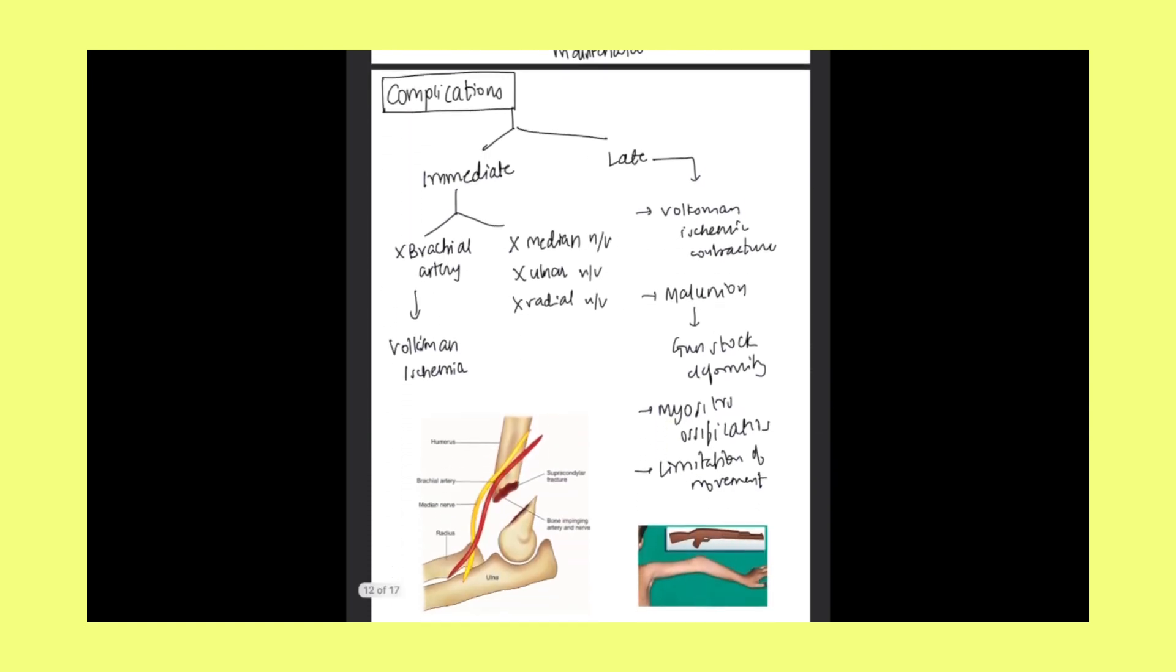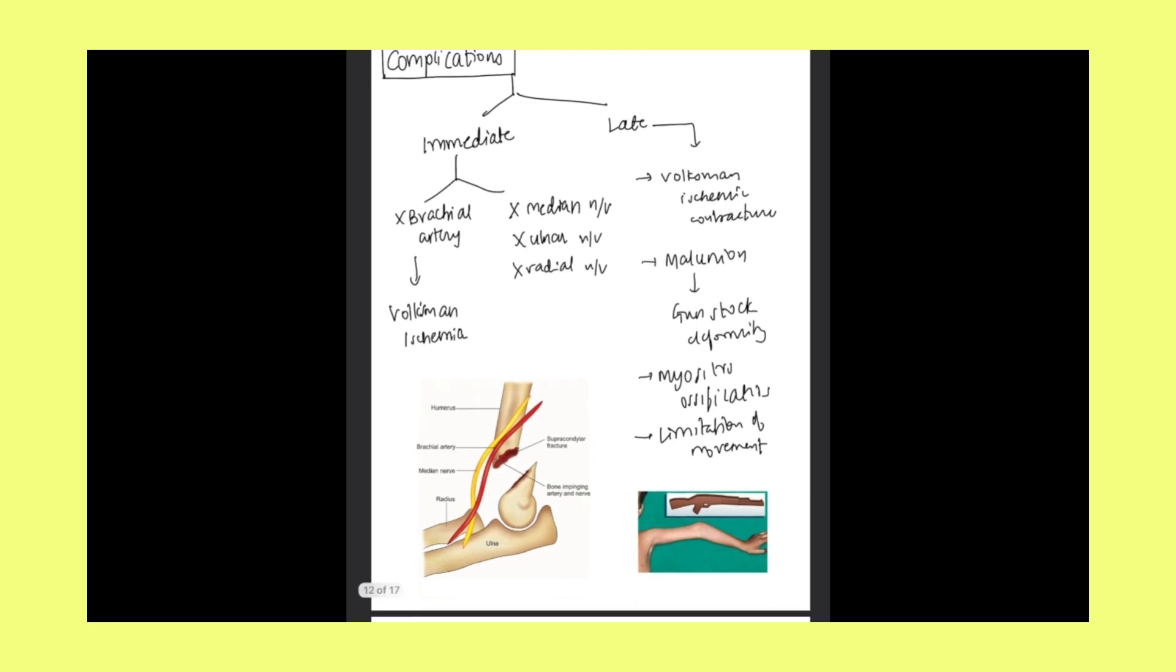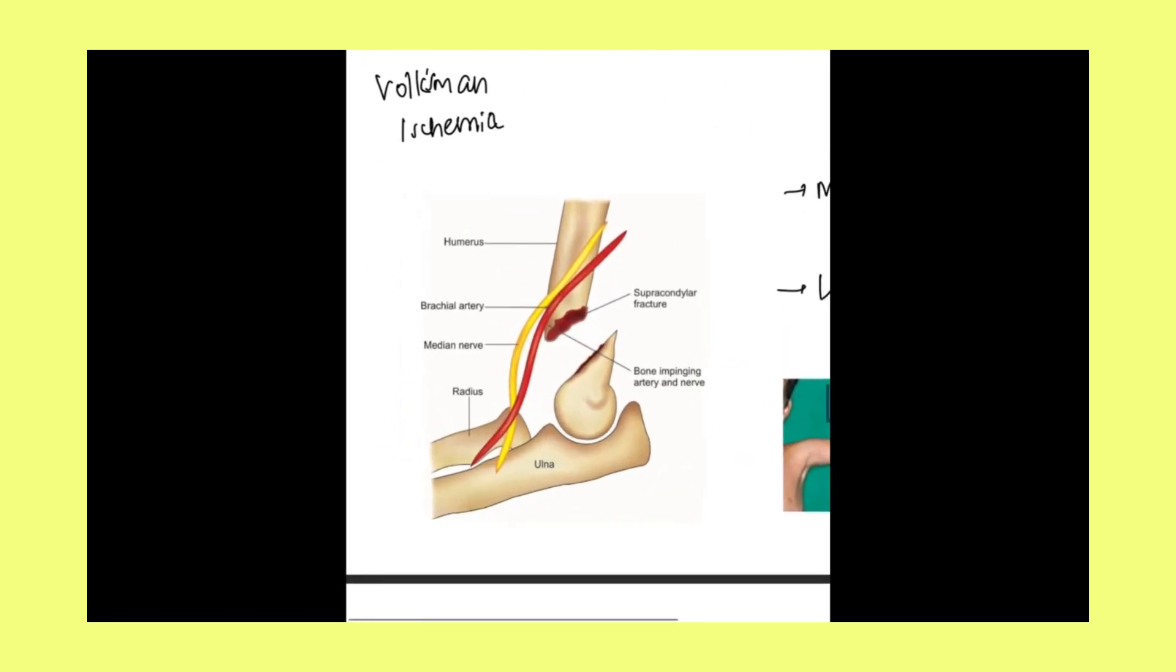Coming to the complications of supracondylar fracture of humerus. The complications are divided into immediate and late on the basis of when they occur. Immediate: first one is injury to the brachial artery, which will lead to Volkmann ischemia. If nerve injuries we see, then median nerve could be injured, ulnar nerve also could be injured, and radial nerve also could be injured. There is a diagram given here. Humerus is associated with all the major nerves. See this brachial artery could be injured, median nerve.